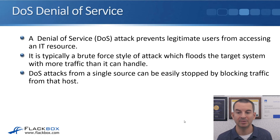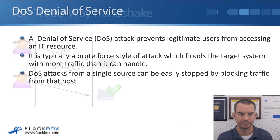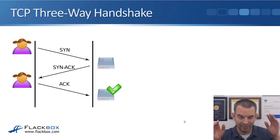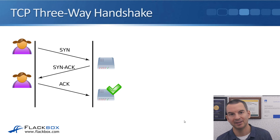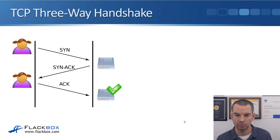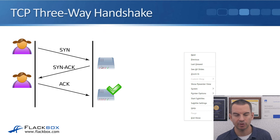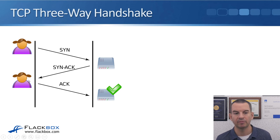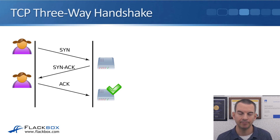DoS attacks from a single source can be easily stopped by blocking traffic from that source. A well-known example is the TCP SYN flood. Normally, TCP uses a three-way handshake: the client sends a SYN, the server replies with a SYN-ACK, and the client sends an ACK to complete the connection, after which normal communication can occur.